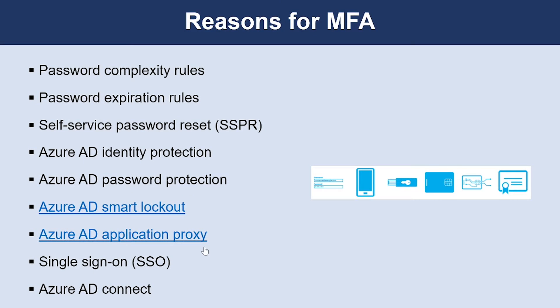The next one is Azure AD Application Proxy, so you can provision security-enhanced remote access to on-premises web applications. The next method is to use single sign-on, or SSO, which includes thousands of pre-integrated SaaS-based applications within your Azure Active Directory. The last one is Azure AD Connect. You can create and manage a single identity for each user across your hybrid enterprise, keeping users, groups, and devices in sync.